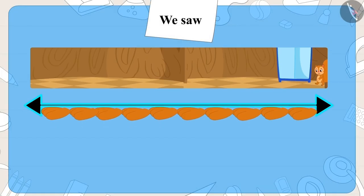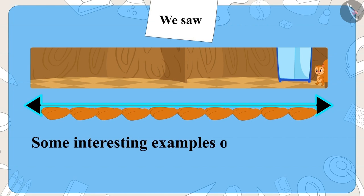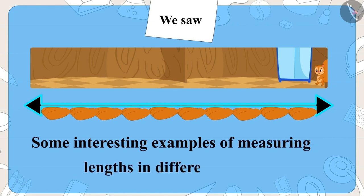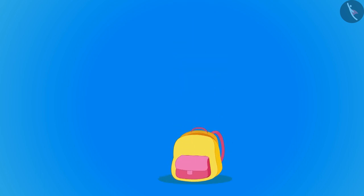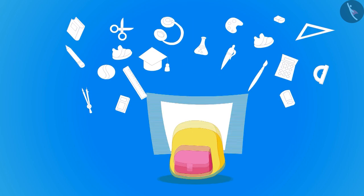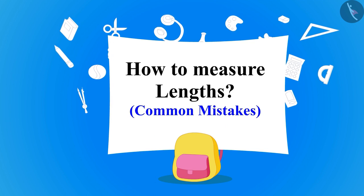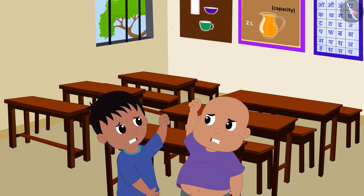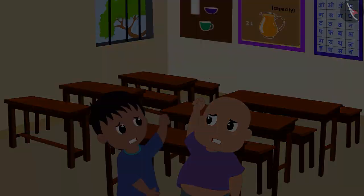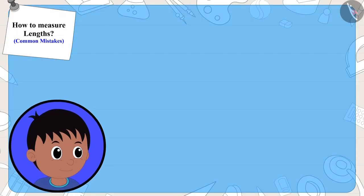In the previous video we saw some interesting examples of measuring lengths in different ways. In this video we will see some common mistakes related to this topic. Raju and Bablu are fighting in class — but why?